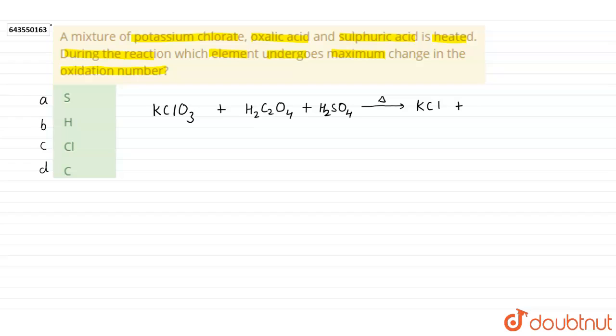And we get K2SO4 as product number 2. Also we get carbon dioxide gas and water in this reaction.